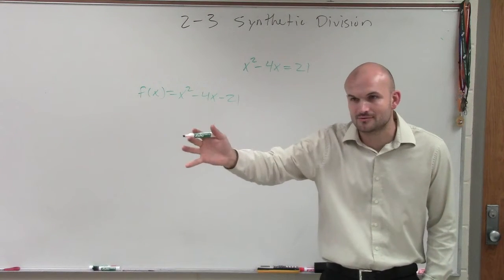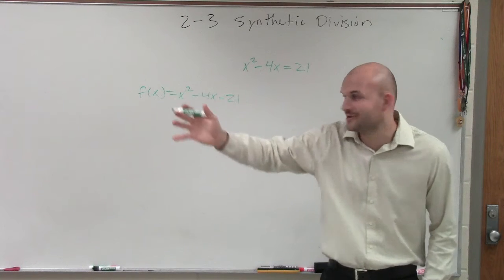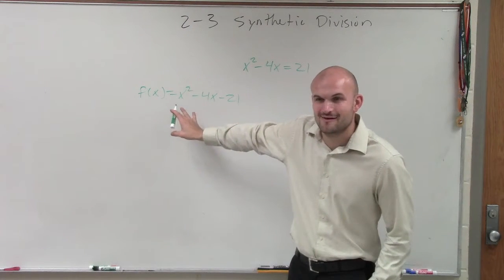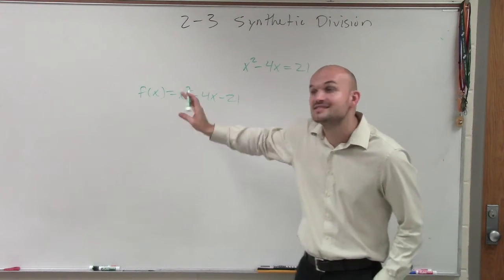What do I do? First step I do? When I say find the zeros of this function, first thing I do, set it equal to zero, right?